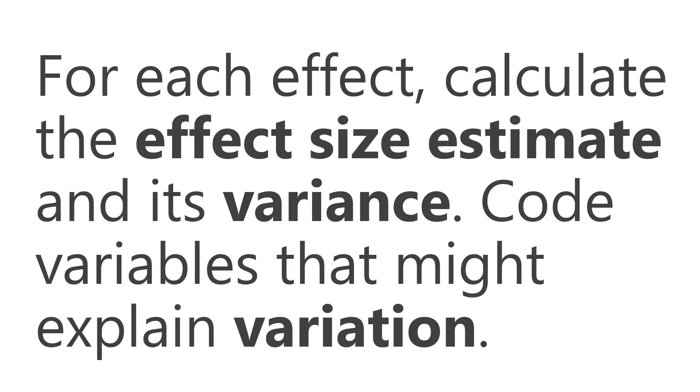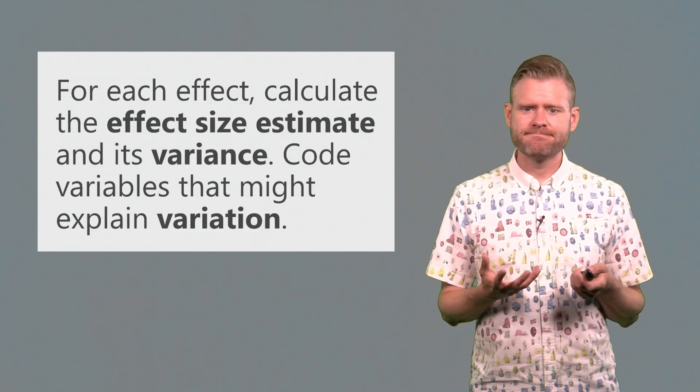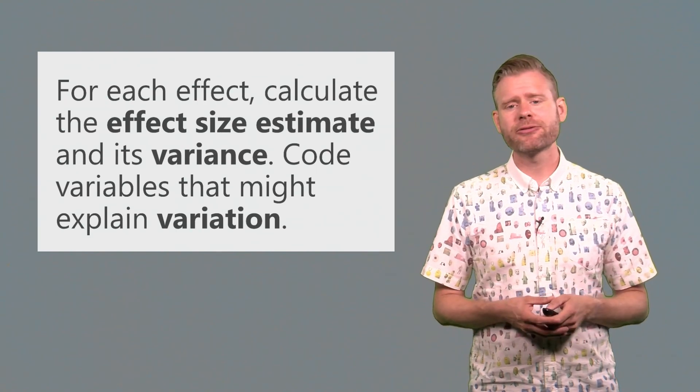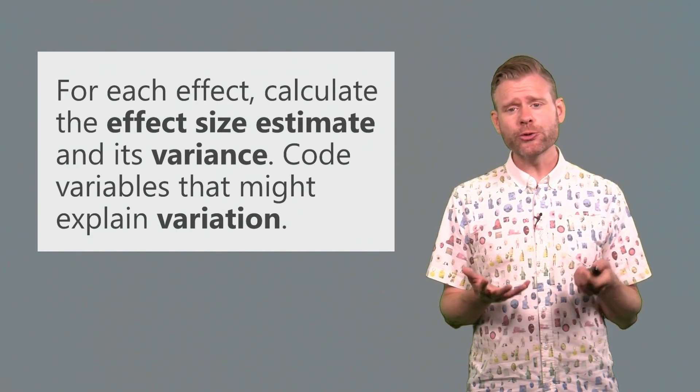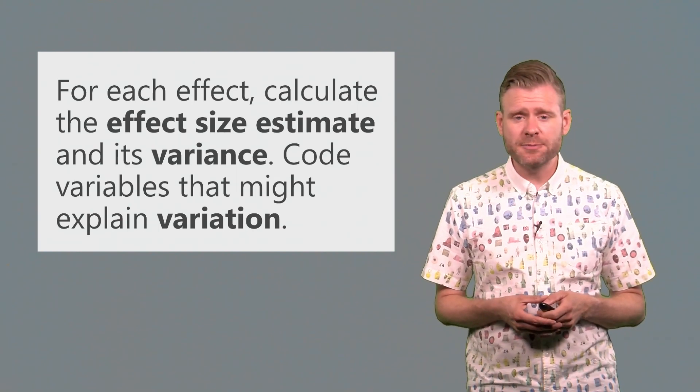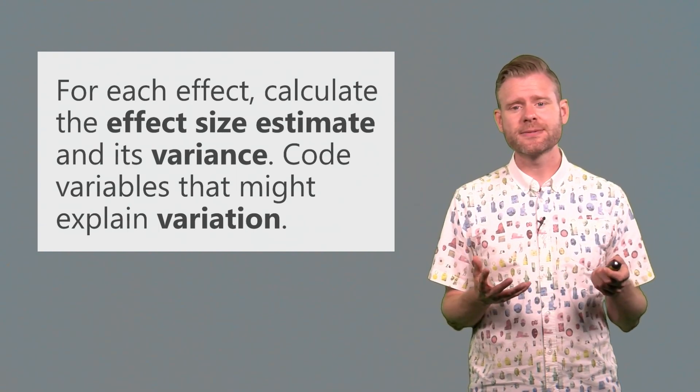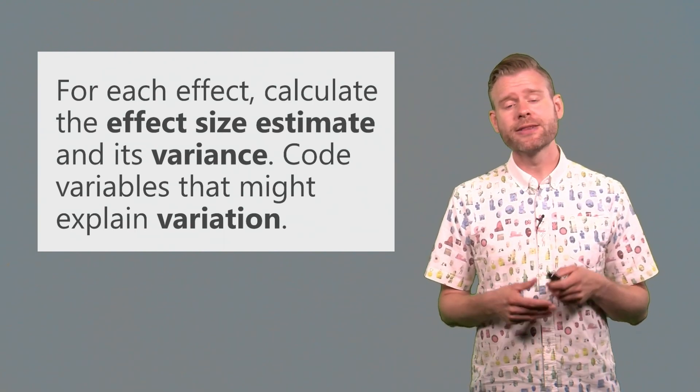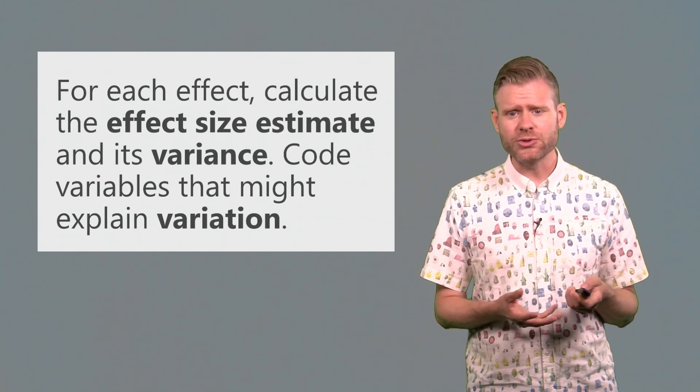If you have identified all the studies that you want to include in your meta-analysis, then for each effect you have to calculate the effect size estimate and its variance. This is actually all you need to perform the meta-analysis itself. However, as you go through the literature, it is also advisable to code variables that might explain variation across studies, like the country in which the study was performed or the type of manipulation used in an experiment.